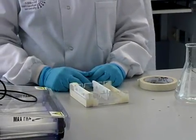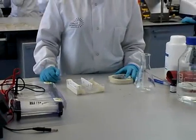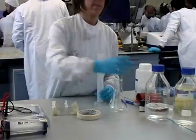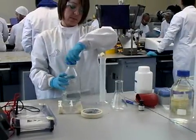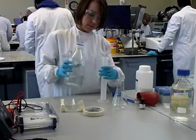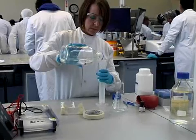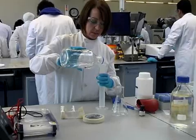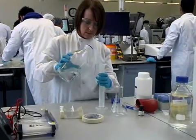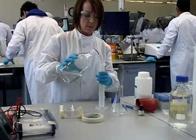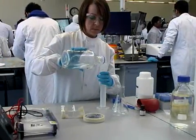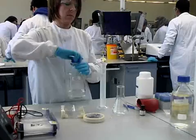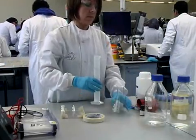We will now prepare the agarose gel. For preparation we require 100ml of Tris-Borate EDTA which is measured out using a measuring cylinder. We have 100ml of Tris-Borate EDTA and are going to prepare a 1% solution of gel, so we need to add 1g of gel to the Tris-Borate EDTA.